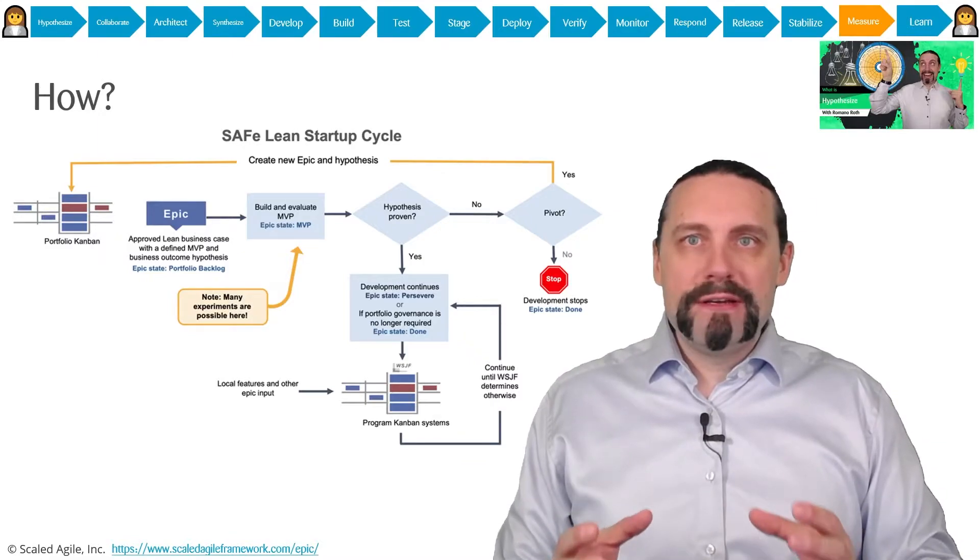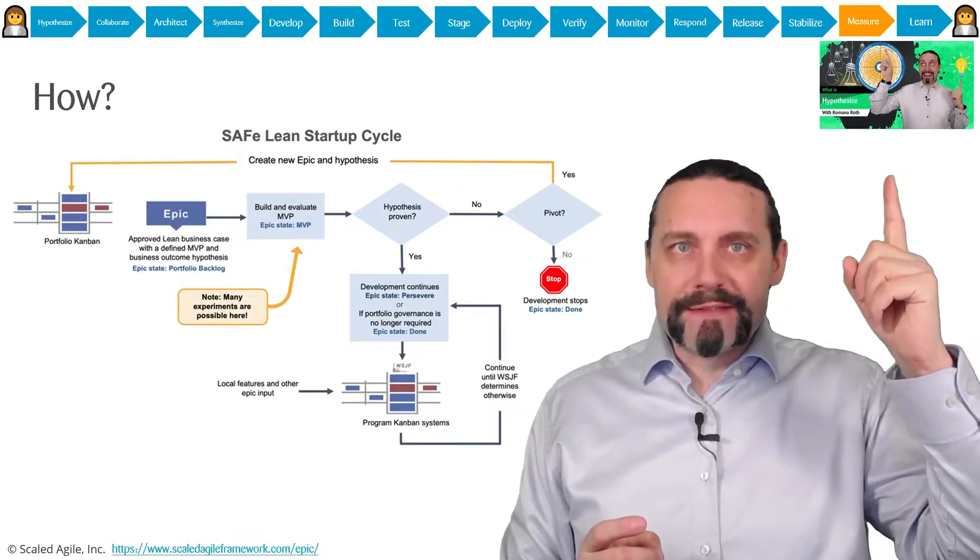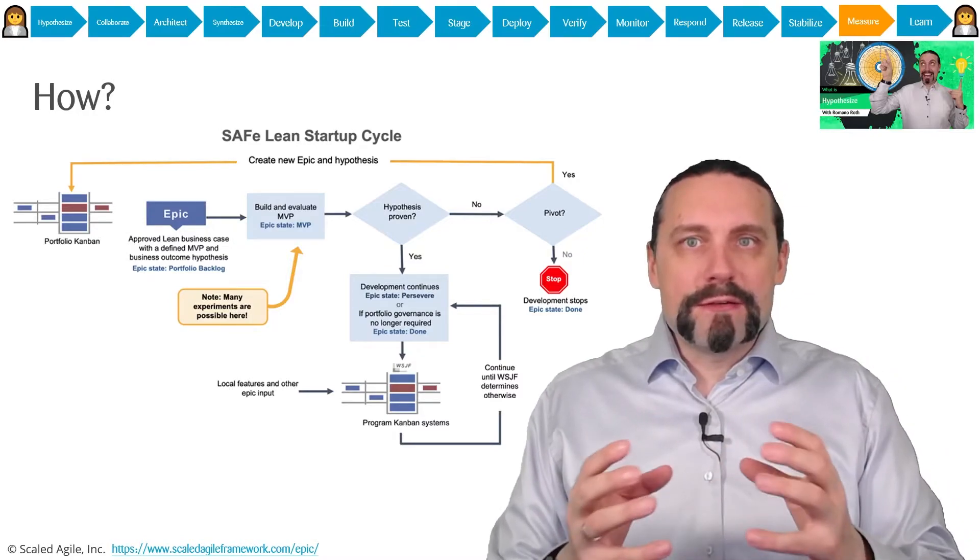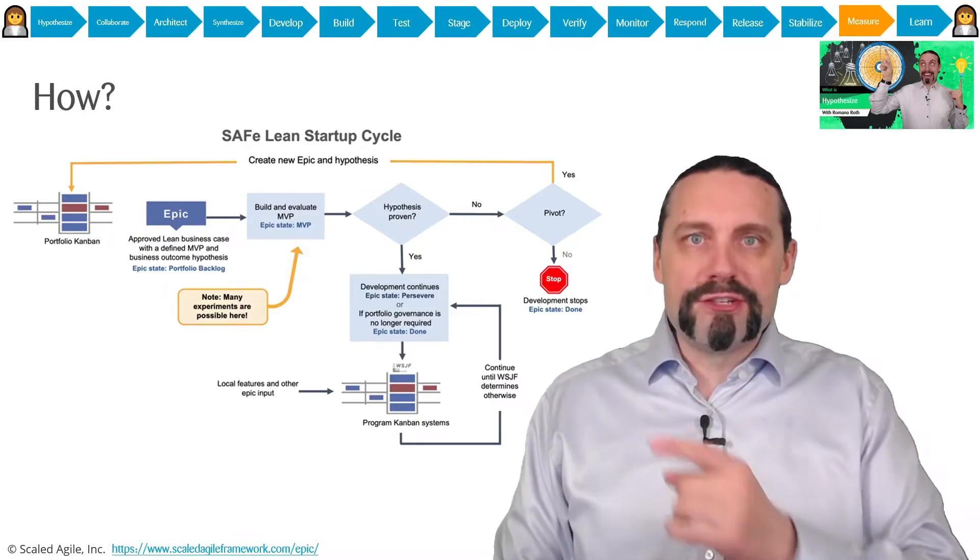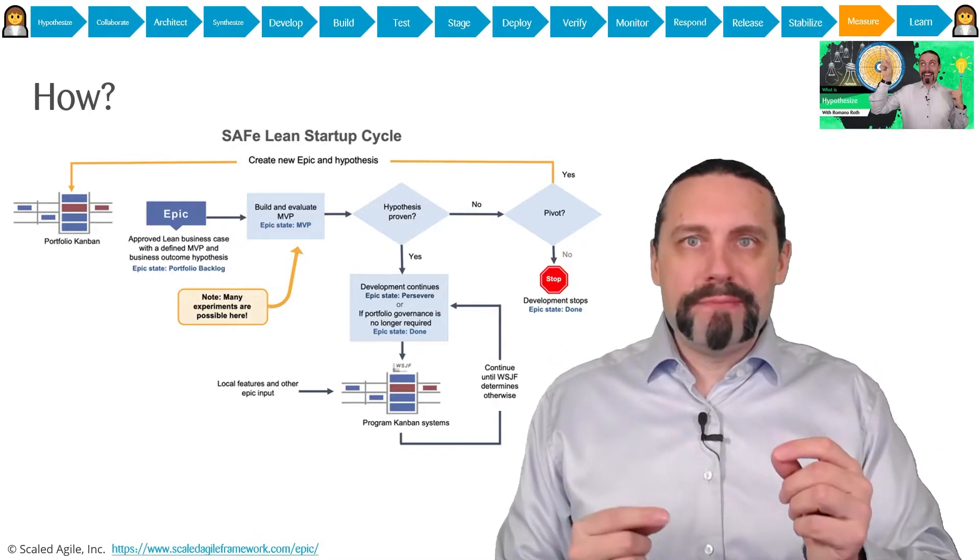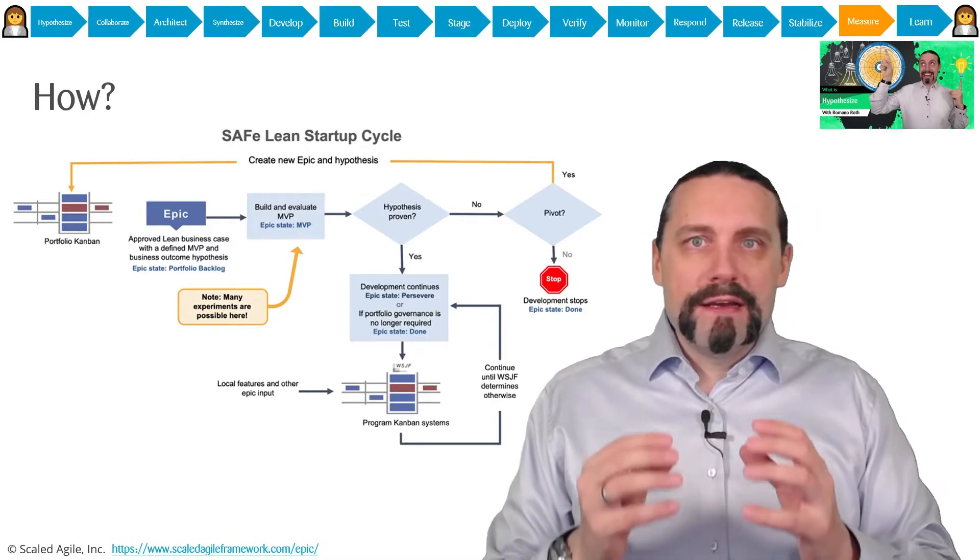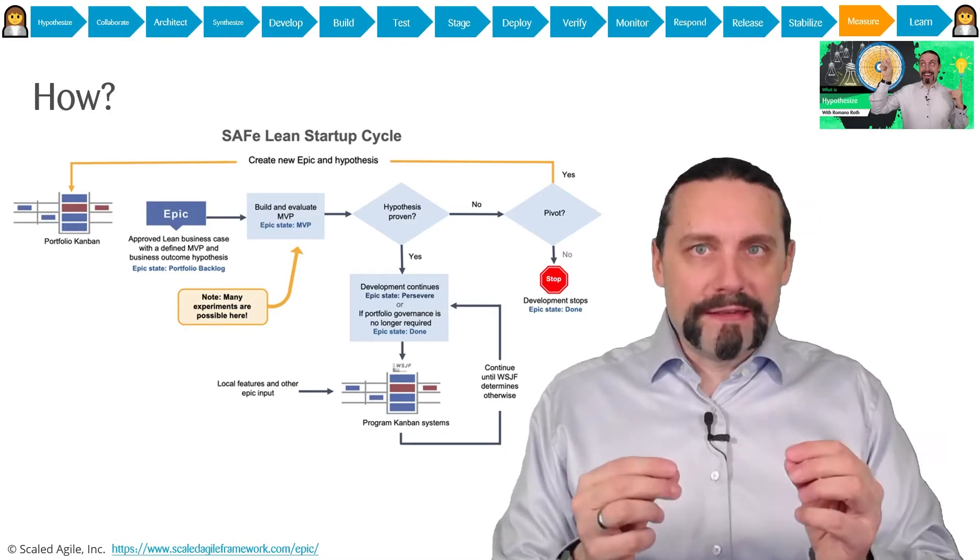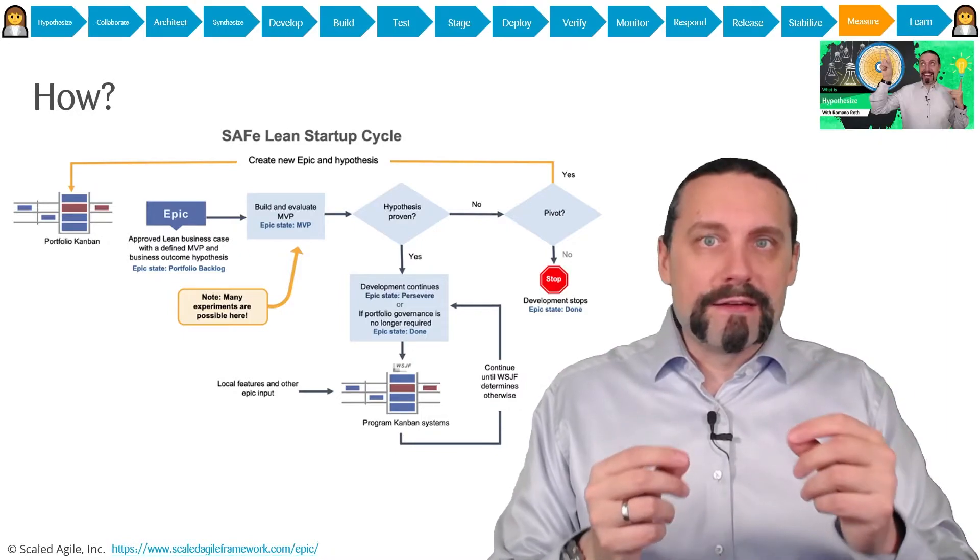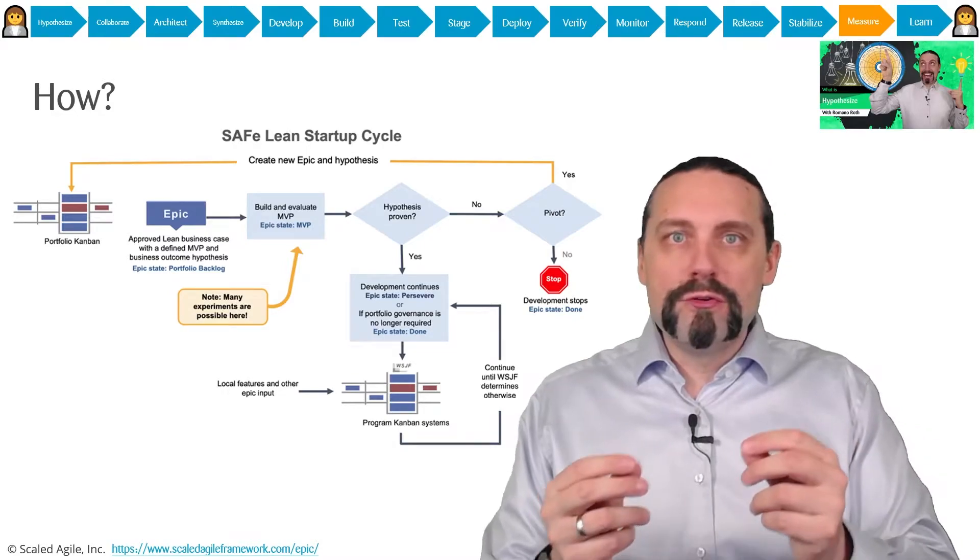Just as a recap, in the hypothesis step which you can re-watch in this video up here, we go with the epic in the so-called lean startup cycle which you can see here. As said, behind an epic there is always a hypothesis. With the lean startup cycle we're trying to identify the minimal viable product we can build to prove if the hypothesis is true or false.